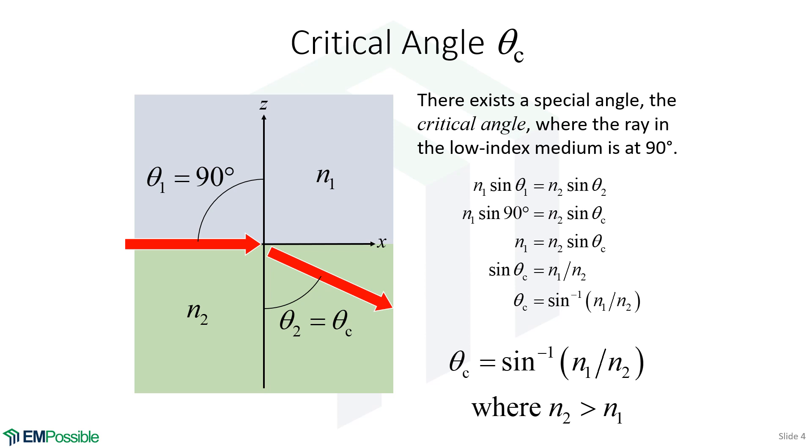This leads to something called the critical angle. What if the larger angle is exactly 90 degrees? Then the angle on the other side would be what we call the critical angle. It becomes impossible to have any angles on this side larger than that—we can only get smaller angles.